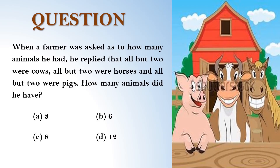In this video let us find the number of animals in a farm. When a farmer was asked how many animals he had, he replied that all but two were cows, all but two were horses, and all but two were pigs. How many animals did he have? Options: A) 3, B) 6, C) 8, and D) 12.